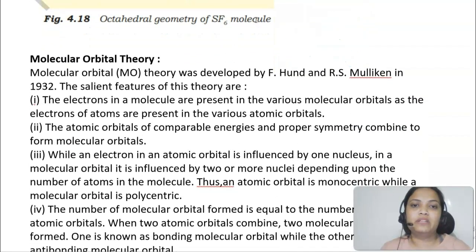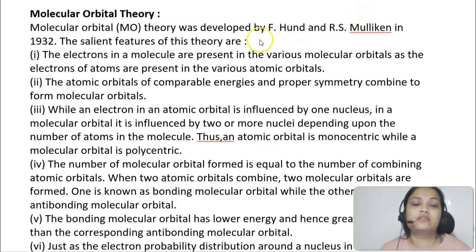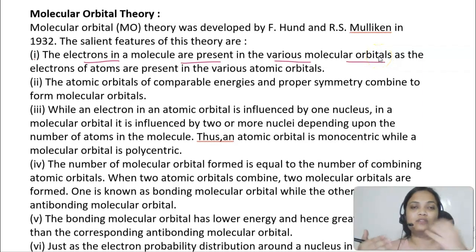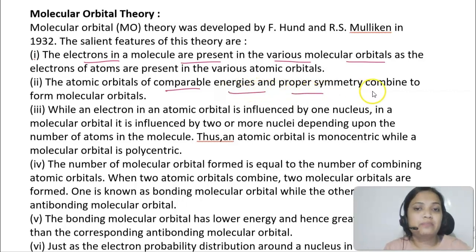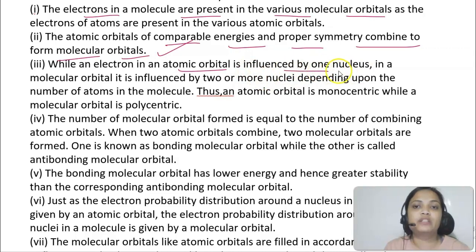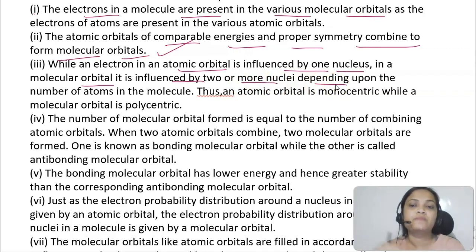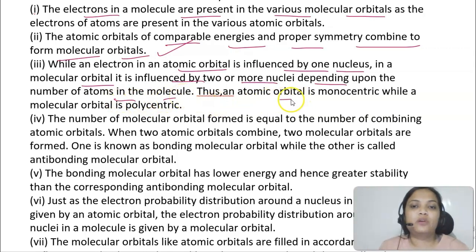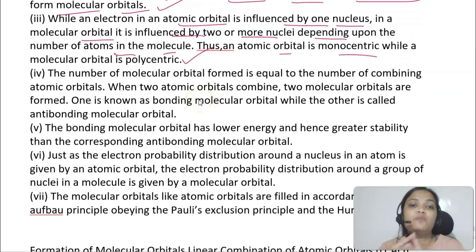The Molecular Orbital theory was developed by Hund and Mulliken in 1932. Its salient features: electrons in a molecule are present in various molecular orbitals; atomic orbitals of comparable energies and proper symmetry combine to form molecular orbitals; in an atomic orbital an electron is influenced by one nucleus, while in a molecular orbital it is influenced by two or more nuclei — so atomic orbitals are monocentric while molecular orbitals are polycentric. The number of molecular orbitals formed equals the number of combining atomic orbitals.